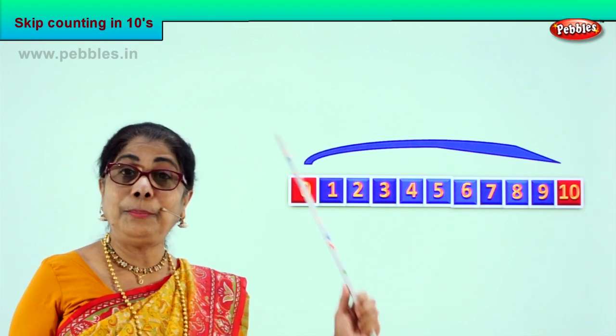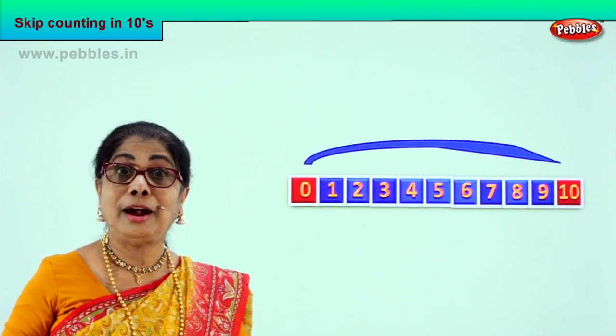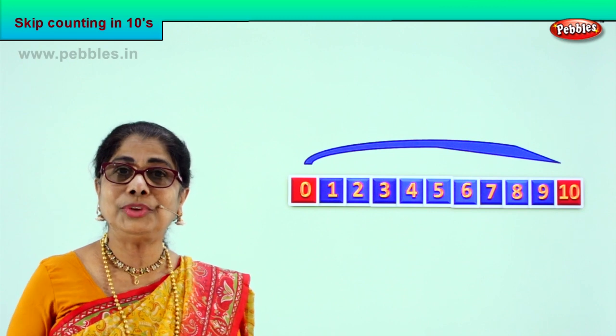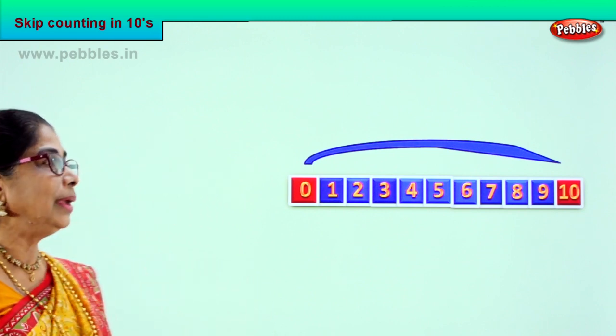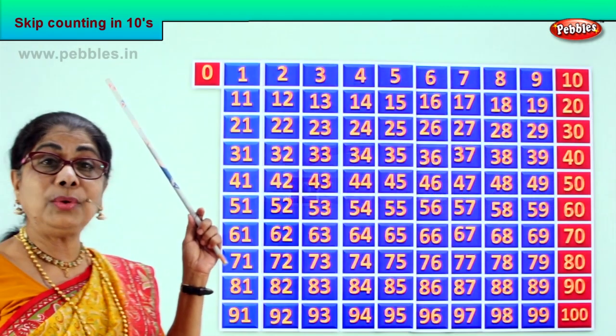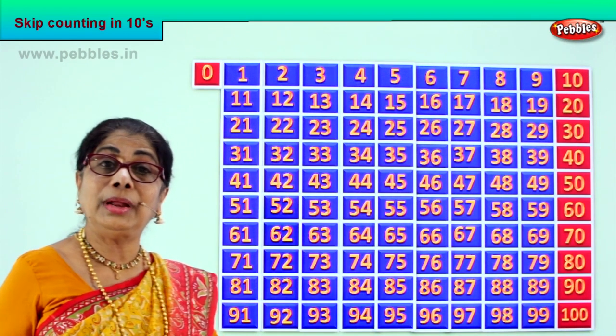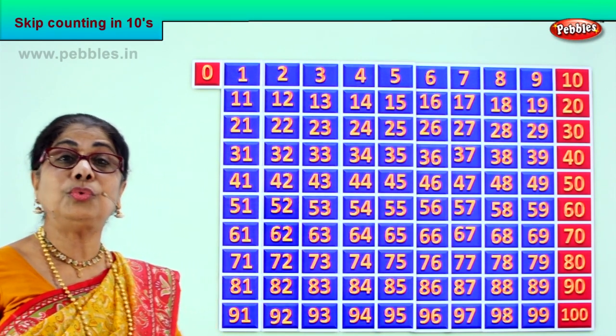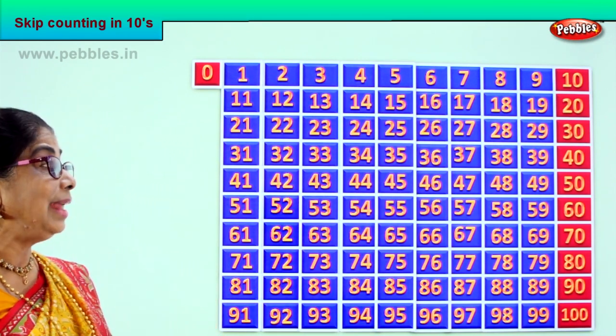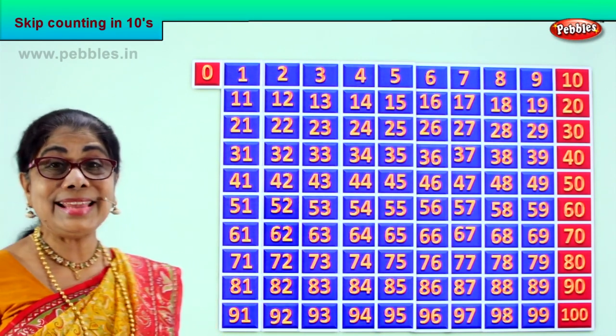So up to hundred, how many times do you have to jump? We're going to look at that. Here we are — let's look at the full pattern of zero to one hundred and see.